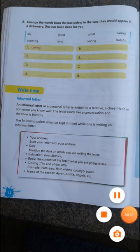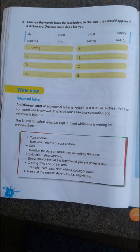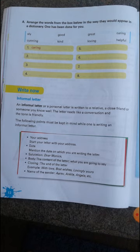There are two types of letters: informal letter and formal letter. Formal letter means it's an official letter — writing to the principal, your class teacher, or some office. That is called a formal letter, like a resignation letter or an application saying you are not coming to school — that is a leave note. Informal letter means writing a letter to a relative, close friend, or someone you know very well.